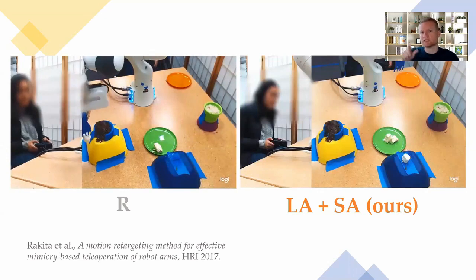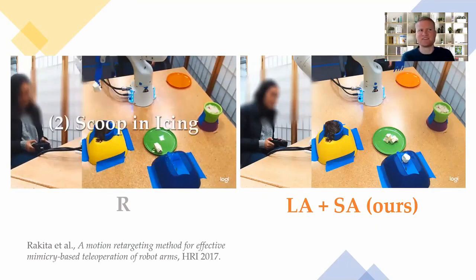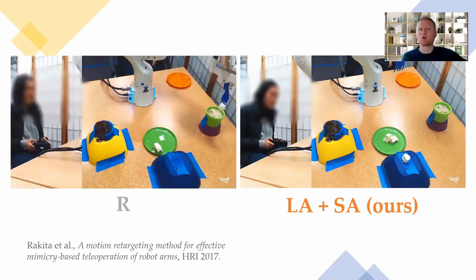In this baseline, the user directly controls the position and orientation of the end effector through a joystick. You can see that they never really change the alignment of the end effector throughout the task and are almost always in a stabbing orientation.